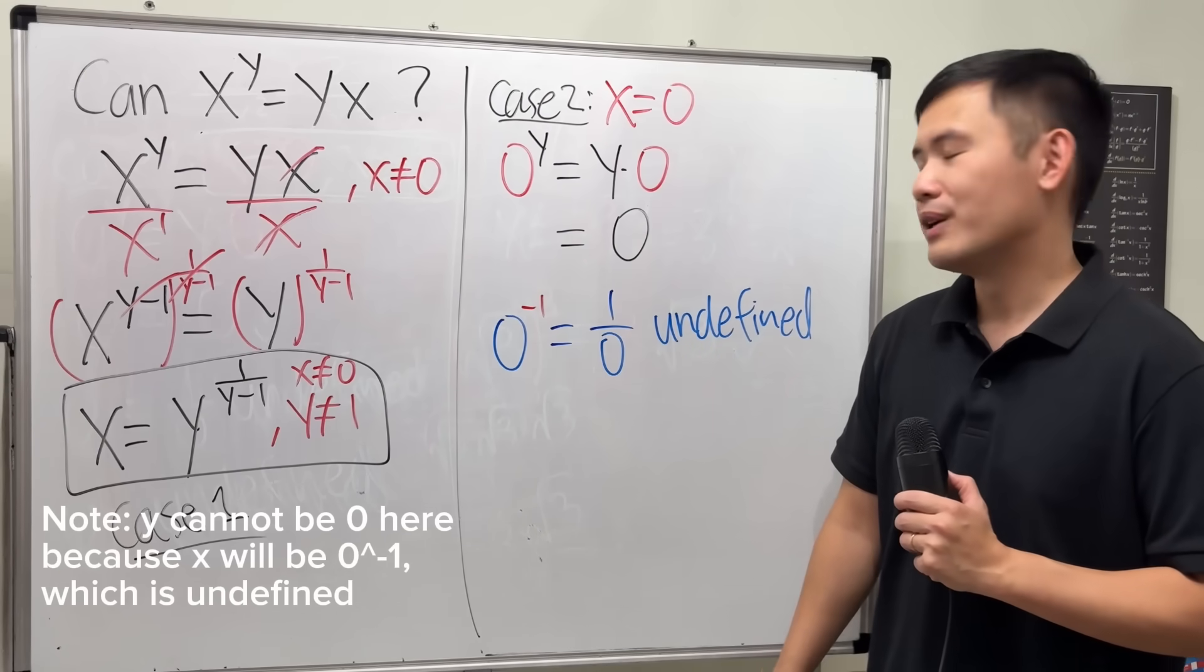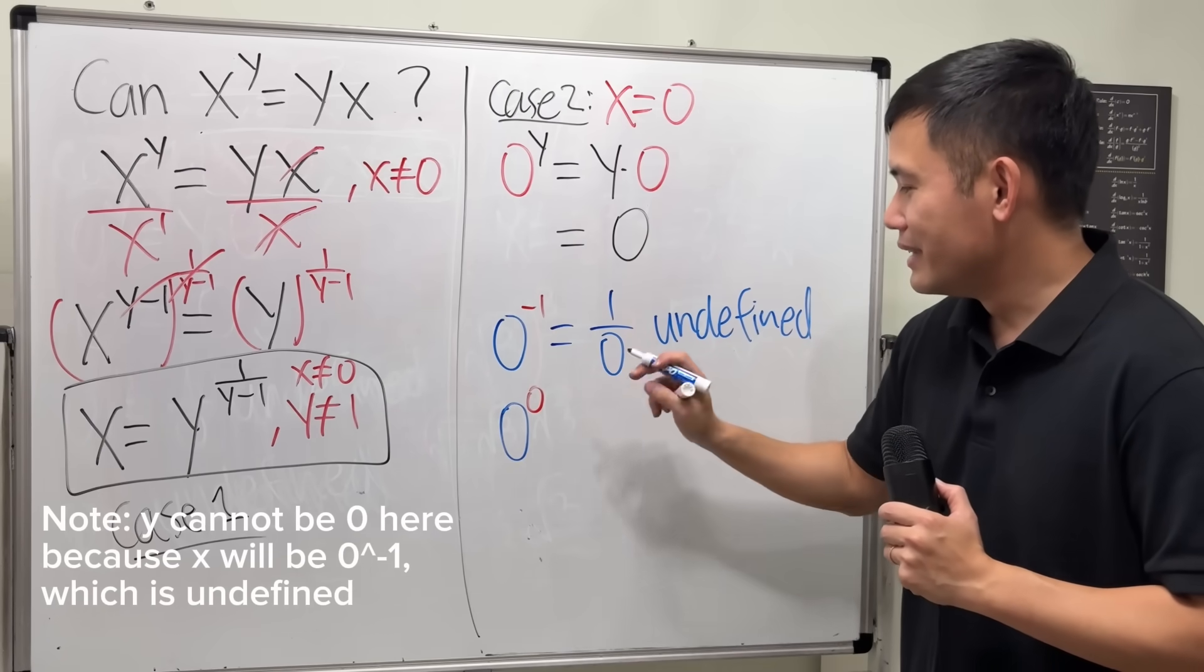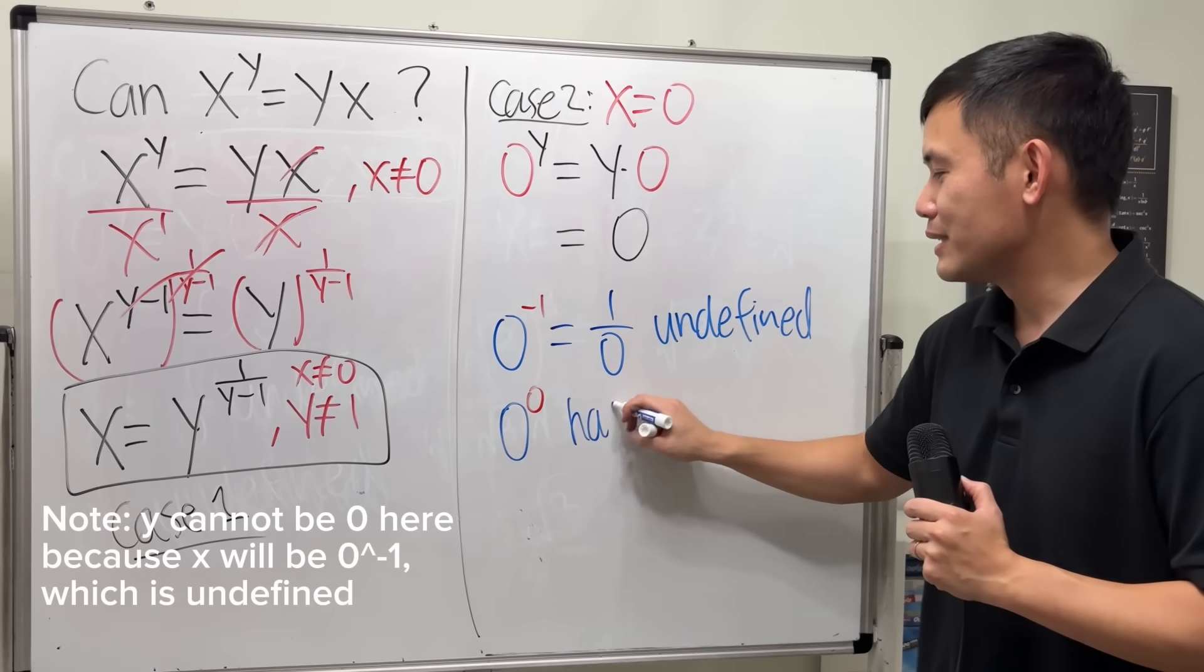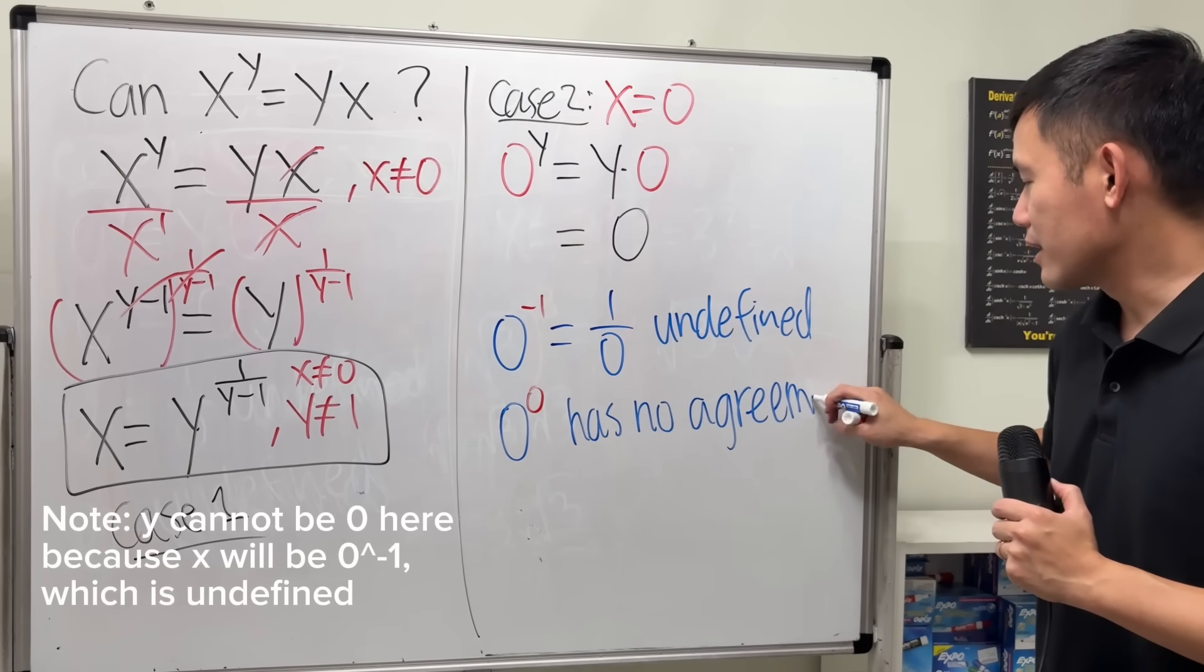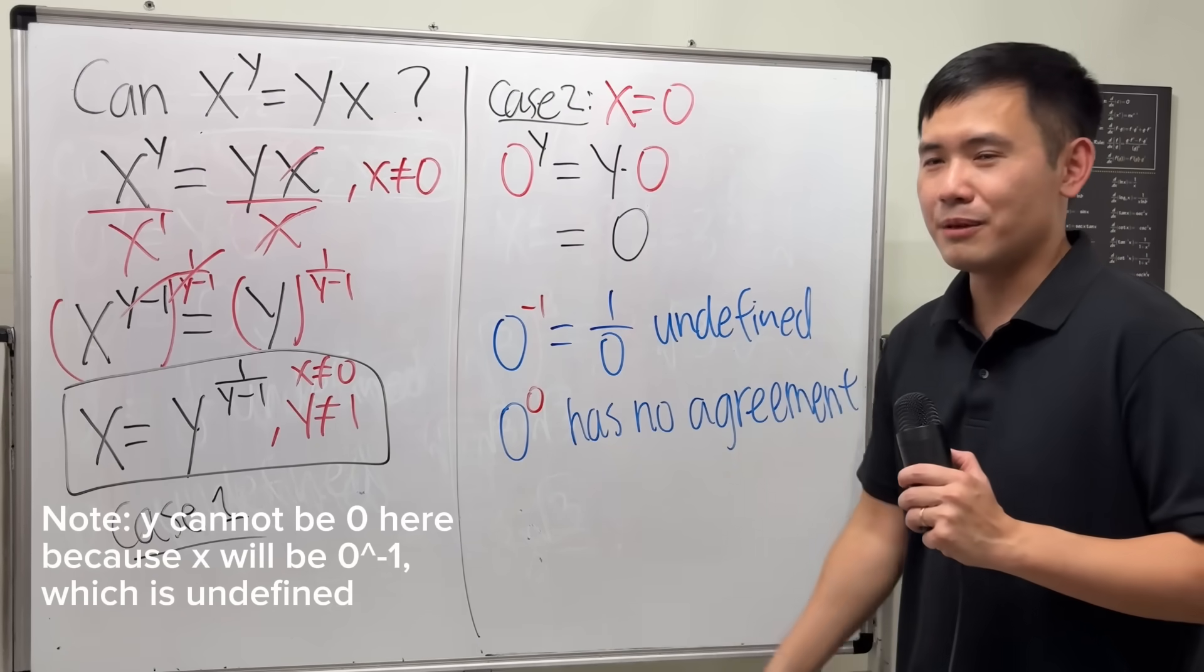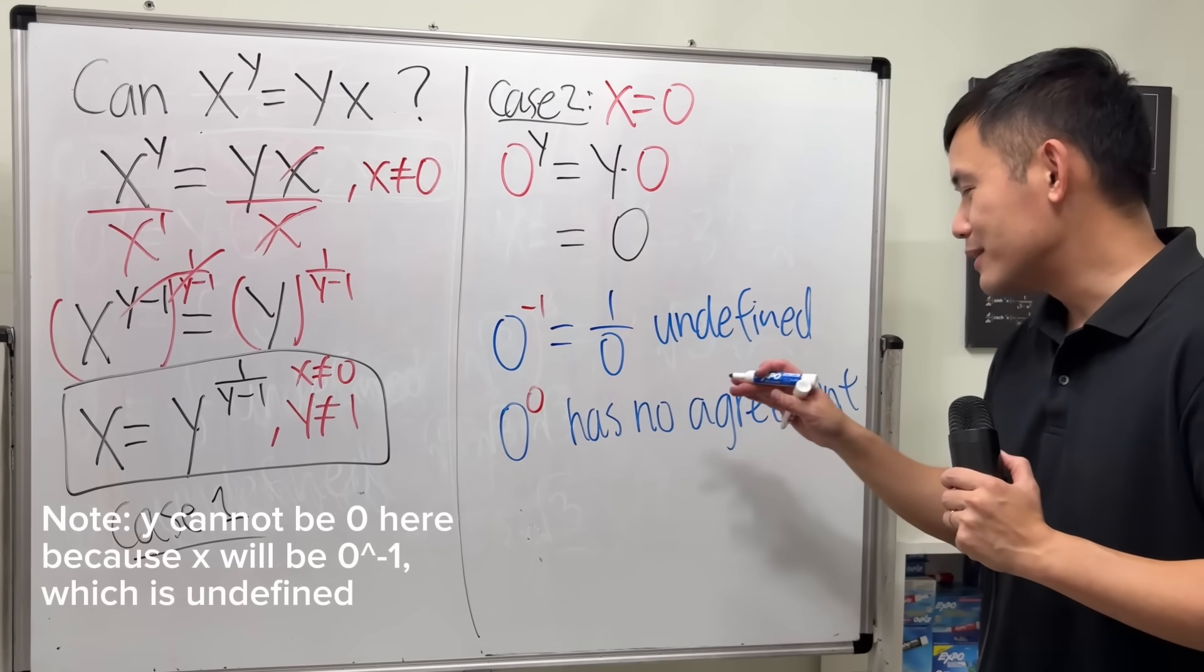But can we have 0 for y? Now, not really. Because 0 to the 0, this right here has no agreement. This is the best possible answer that I can provide, or best possible response. I think that's a better word. It has no agreement. So, no answer.